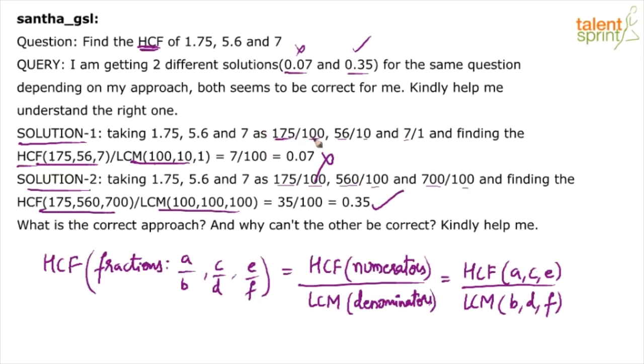Now, nothing wrong in writing 1.75 as 175 by 100, 5.6 as 56 by 10, and 7 as 7 by 1. But when you are solving for HCF, when you are trying to find the HCF, ensure that the number of decimals are made equal and only then you proceed with whatever method you want. So, ideally, 1.75, 5.6, and 7 should be taken as 1.75, 5.60, and 7.00. Now, you may be wondering that what is the difference? 7 and 7.00 are same, 5.6 and 5.60 are same. But then, by finding out HCF, you have to take care of this.